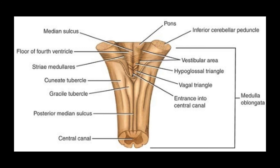On the posterior surface of the medulla we also have the gracile tubercle and the cuneate tubercle. These are small elevations caused by the underlying gracile nucleus and cuneate nucleus respectively.